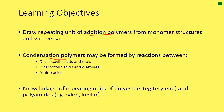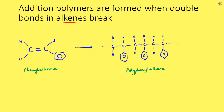So that's what we're going to do. Let's do addition polymerization first. Addition polymers are formed when double bonds in the alkenes break. Addition polymerization uses alkenes and the double bonds break, and those electrons are used to bond with adjacent monomers.